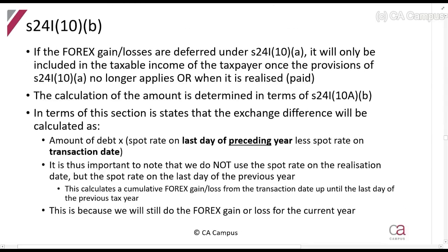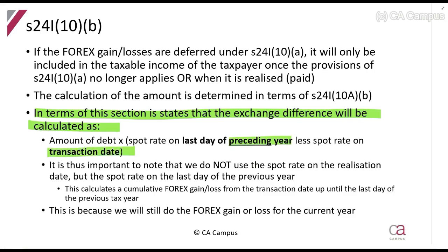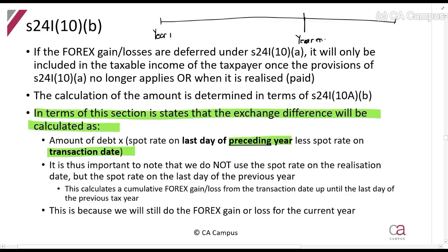Basically, you will not perform any calculations of foreign gains and losses during the deferral period. However, the moment the debt is realized, you will calculate the exchange gain or loss as follows: take the amount of debt multiplied by the spot rate on the last day of the preceding year, less the spot rate on the transaction date. So: this is year one, this is year end for year six, and over here in year seven is where it is realized.